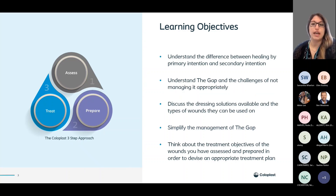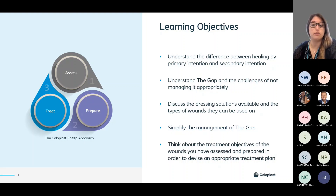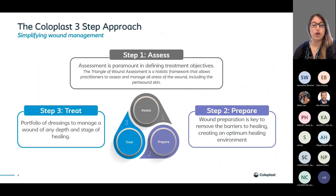Our learning objectives for today are to understand the difference between healing by primary intention and secondary intention. We're going to understand the gap and the challenges of not managing the gap appropriately. We're going to discuss the dressing solutions available and the types of wounds they can be used on, and we're going to see how we can simplify the management of the gap. At the end, we're going to think about treatment objectives and look at some case studies. Here at Coloplast we like to simplify wound management.